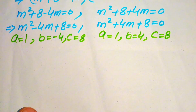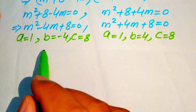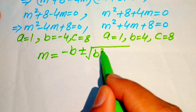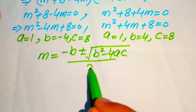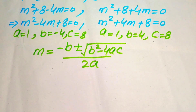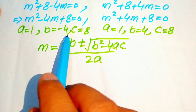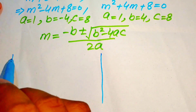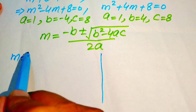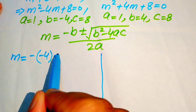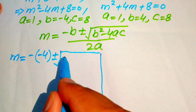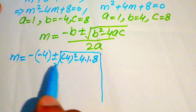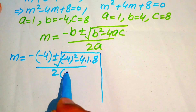The quadratic formula is m equals minus b plus or minus square root of (b squared minus 4ac), divided by 2a. Substituting the first case values: m equals minus(minus 4) plus or minus square root of (minus 4) squared minus 4 times 1 times 8, all divided by 2 times 1.